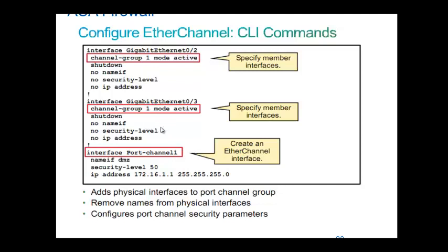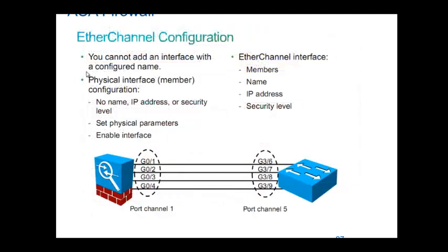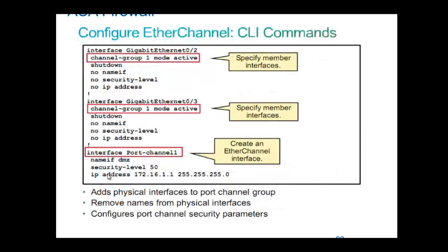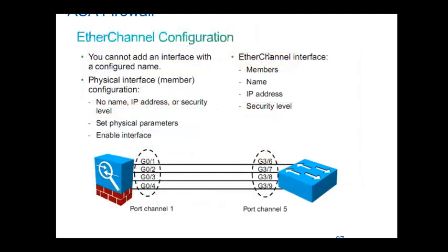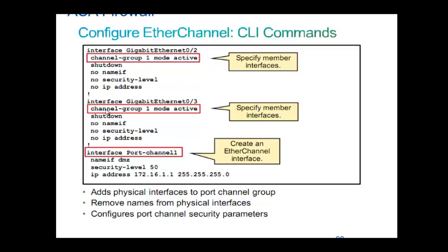In a redundant interface, we used to say members under the redundant interface. But here for port channel, there are no member commands — you create the port channel and then call the channel group under the physical interface. Add the physical interface to the port channel group, then remove the names from physical interfaces. Let's see the implementation.